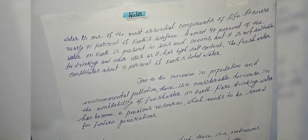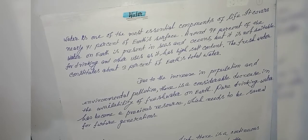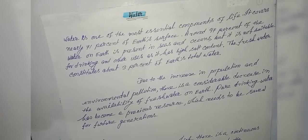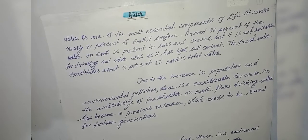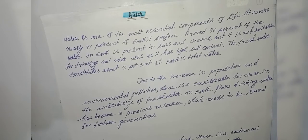Water is one of the most essential components of life. It covers nearly 71% of Earth's surface. Around 97% of the water on Earth is present in seas and oceans, but it is not suitable for drinking and other uses as it has high salt content. The fresh water constitutes about 3% of Earth's total water.